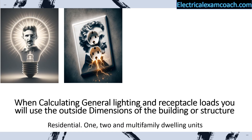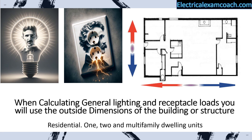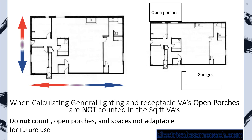When calculating our general lighting and receptacle loads, we will use the outside dimensions of the building or structure — measuring from the outside of the building in both directions. Open porches and spaces that are not adaptable for future use are not counted in the square footage. In the testing world, the question will tell you whether or not a space is adaptable for future use; if the question doesn't say anything about it, assume it is adaptable and count it.